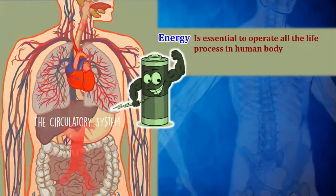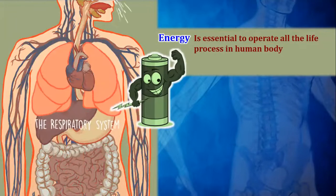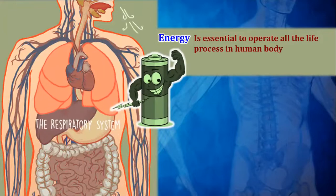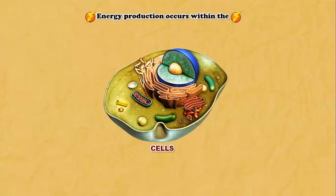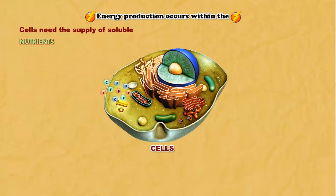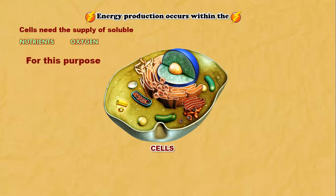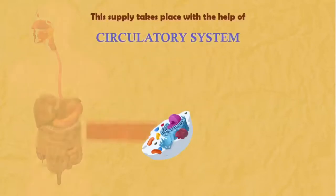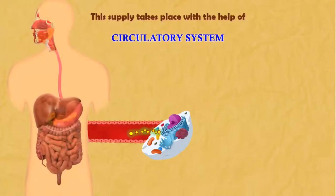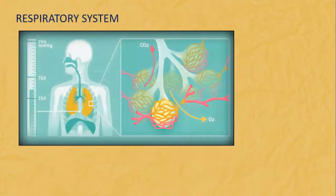Energy is essential for our heart and all the processes in our body to function — it is essential to operate all life processes. Energy production occurs within the cells. Cells need a supply of soluble nutrients, including oxygen. This supply takes place with the help of the circulatory system, which carries nutrients from food directly to the cells of the body.